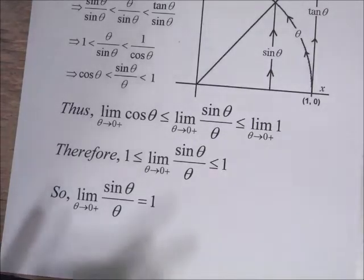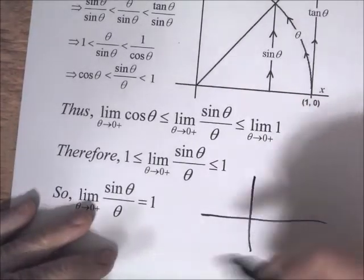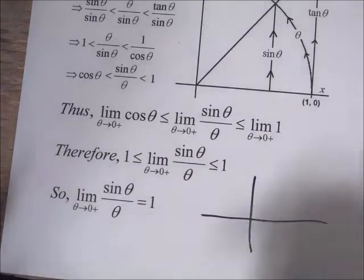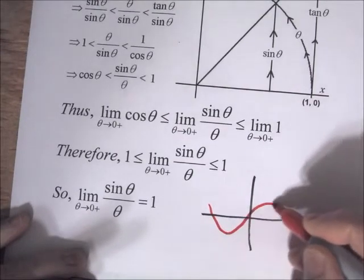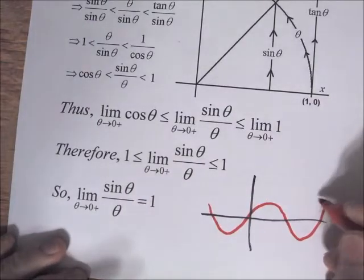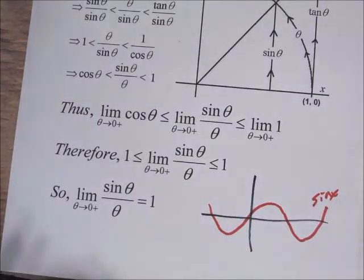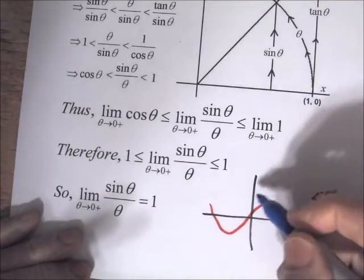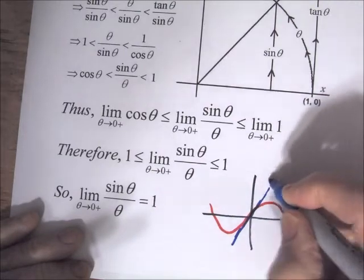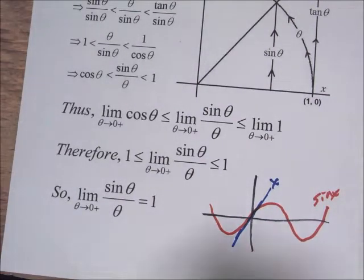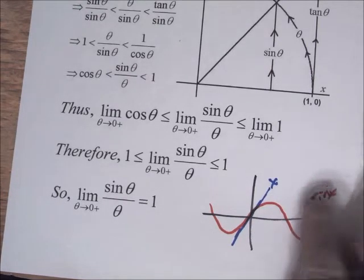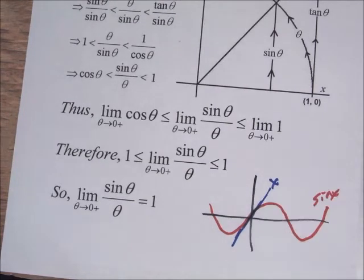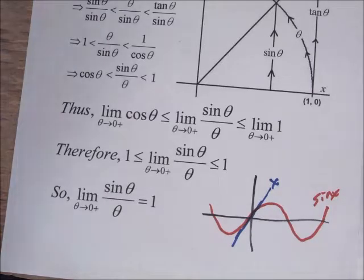Intuitively, if you think about the graph of the sine function, sine x looks like this, and f(x) = x is just this line. As x gets close to 0, the sine x and x approach 0, and it looks from the graph like they have approximately the same slope there. So it's not surprising that the ratio would be 1 in the limit.